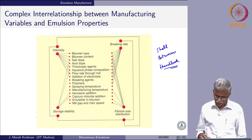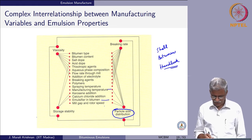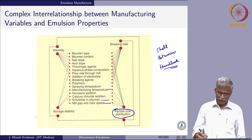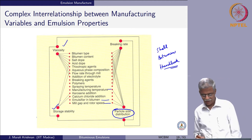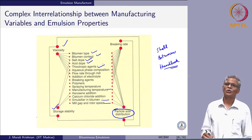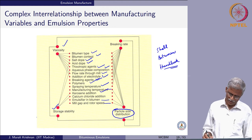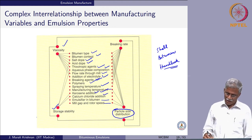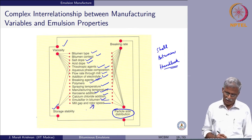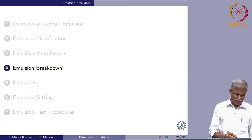Many complex interrelationships exist between manufacturing variables and emulsion properties. From the Shell Bitumen Handbook, particle size distribution is affected by manufacturing temperature, emulsifier, and mill gap. Breaking rate, viscosity, and storage stability are each influenced by multiple factors including bitumen type, bitumen content, salt, acid, thixotropic agents, aqueous phase composition, flow through the mill, electrolyte addition, breaking agents, polymer use, spraying temperature, kerosene addition, calcium chloride, emulsifier in bitumen, and colloidal mill details.